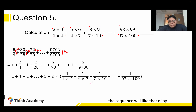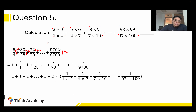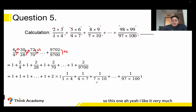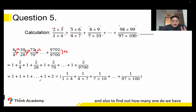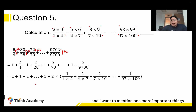So the sequence will look like that. We see the denominators: 4 = 1×4, 28 = 4×7, 70 = 7×10 — each is a product of two numbers with a difference of 3. The next step is to apply the method of differences to separate this kind of fraction and find out how many 1s we have.